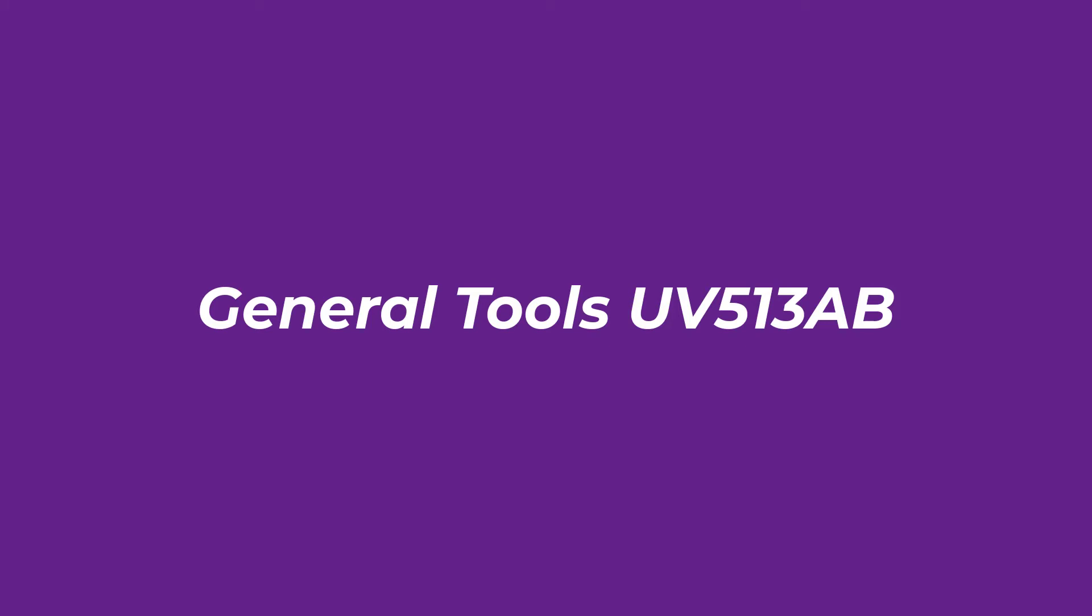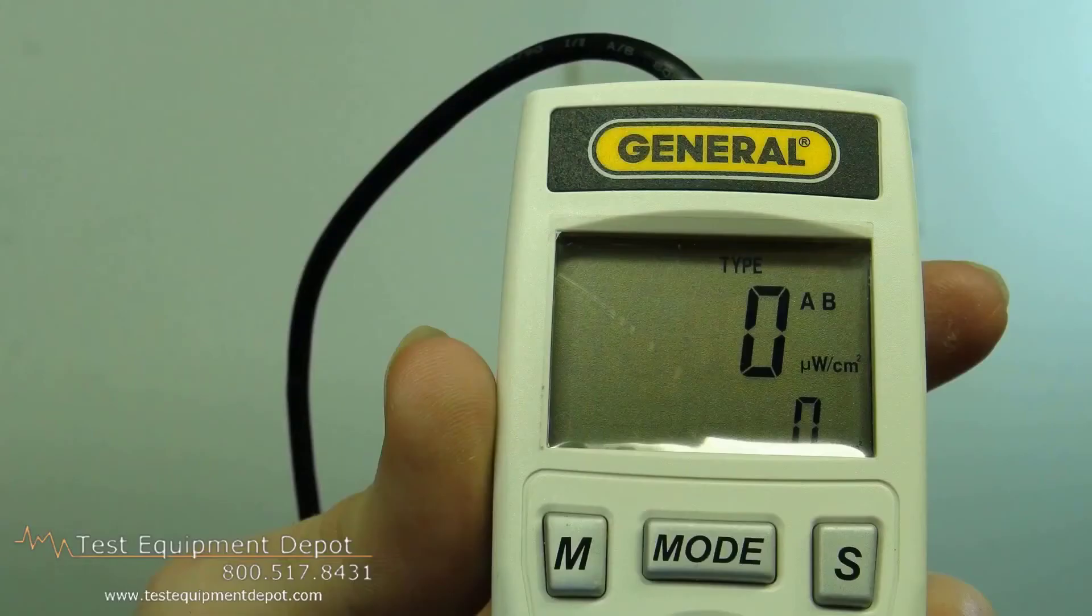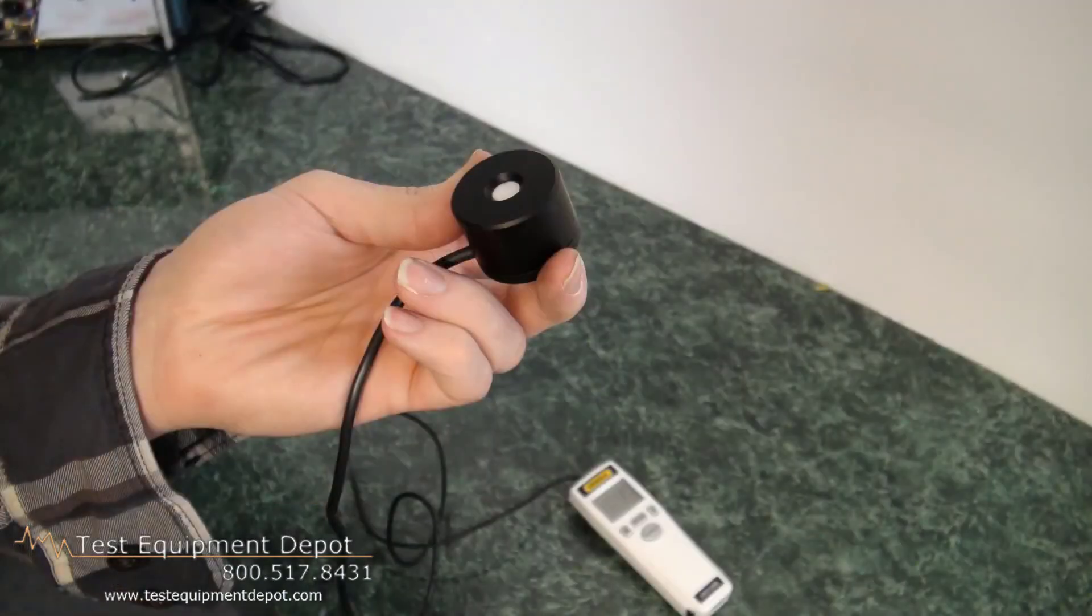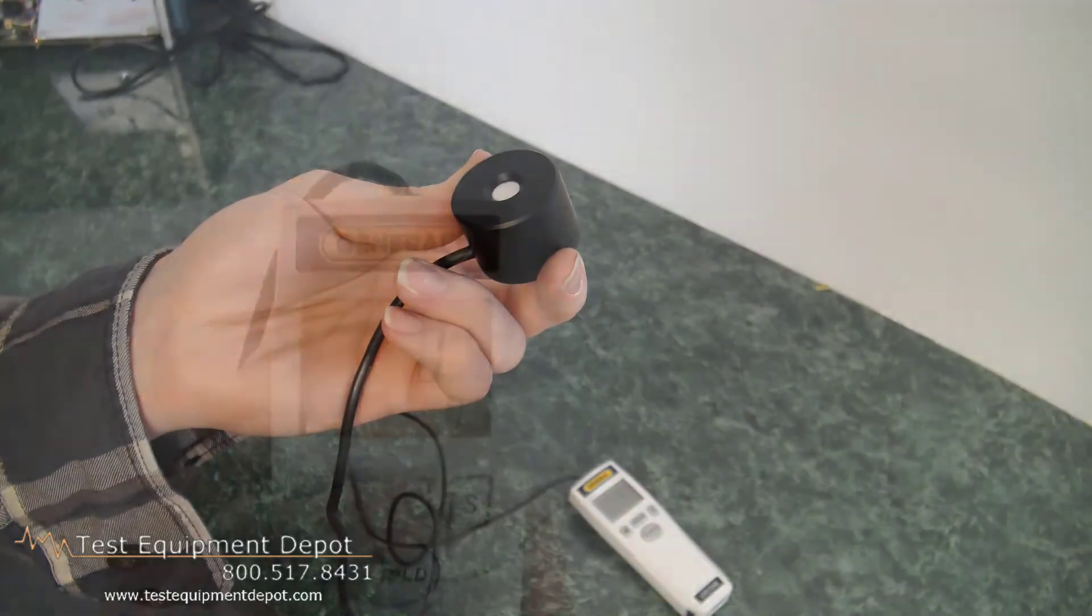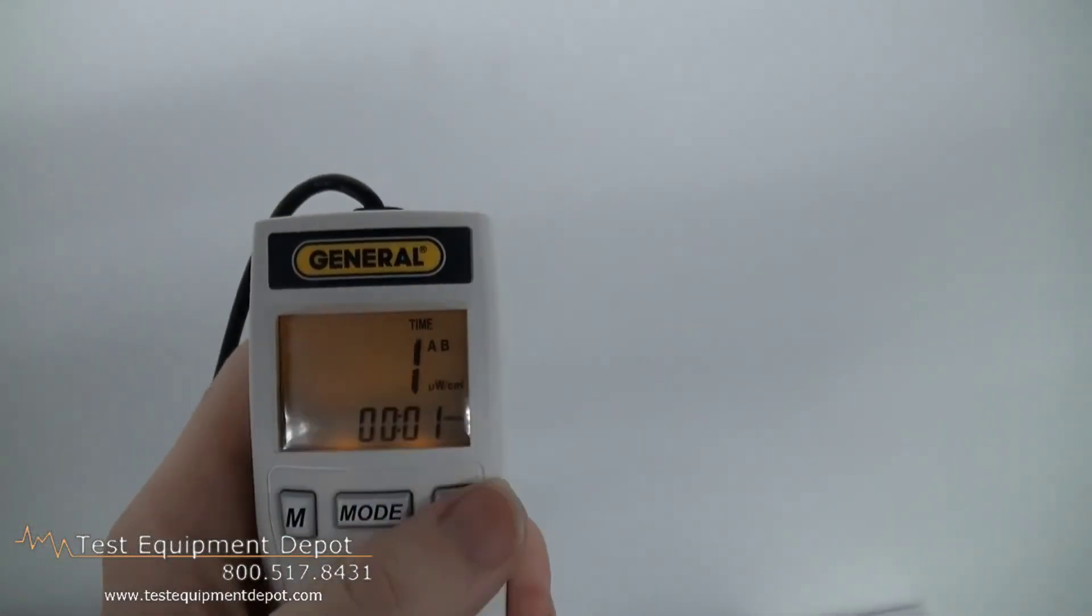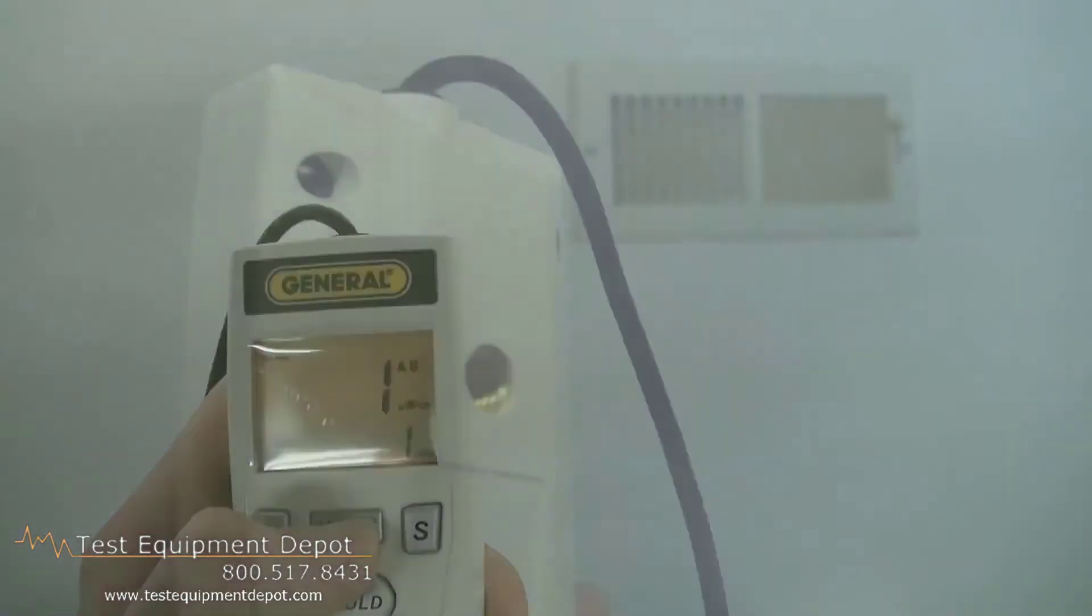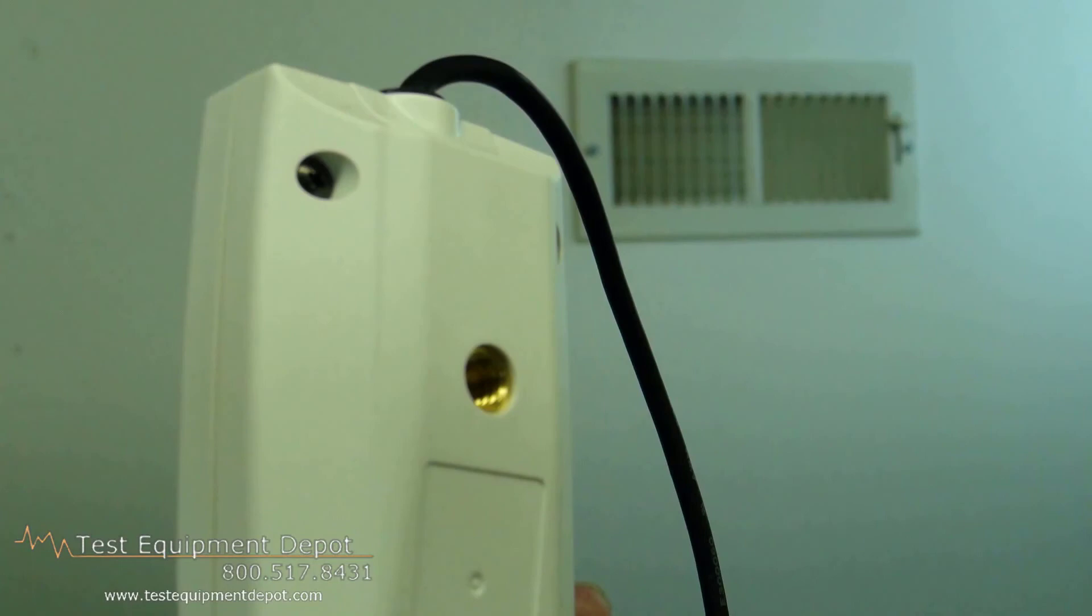Number 1: General Tools UV513AB. The General Tools UV513AB offers models with UVA, UVB, or UVC measurements, with the latter costing somewhat more.